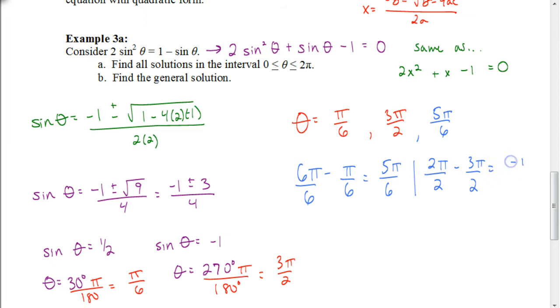But when I subtract these, I get negative pi on top over 2. Negative pi over 2 is outside of our interval because the interval has got to be between 0 and 2 pi. This is negative, so it's outside of that interval. So these would be our solutions for part A.